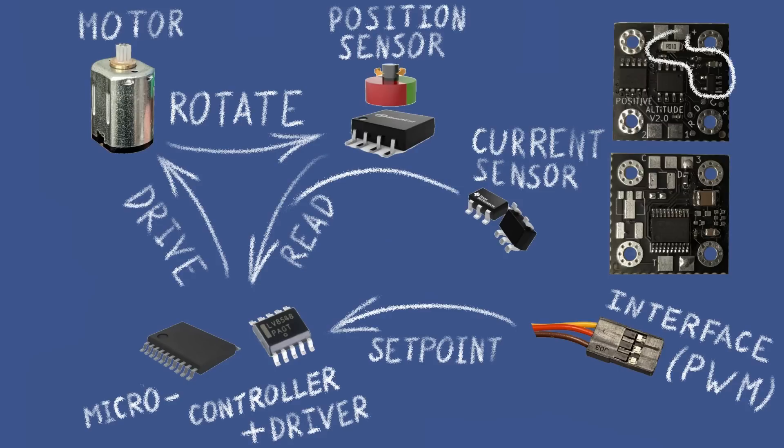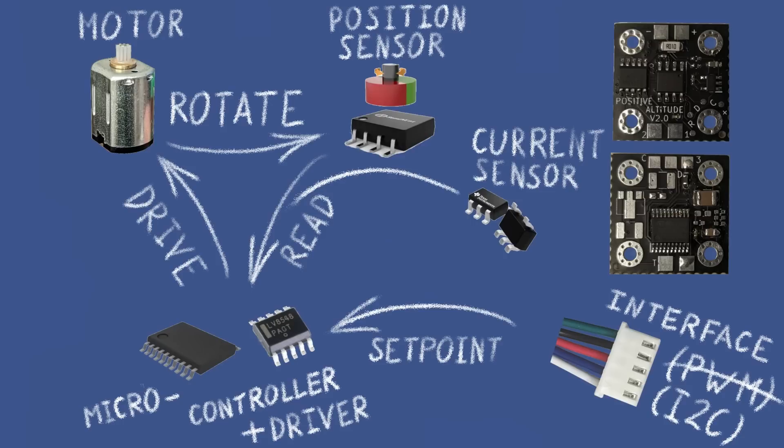The last important change is the communication interface. Instead of a simple PWM signal, I am using the I2C interface here. It's a widely used interface that allows two-way communication. So now I can also read the current state, position, rotation speed and other data from the servo motor.